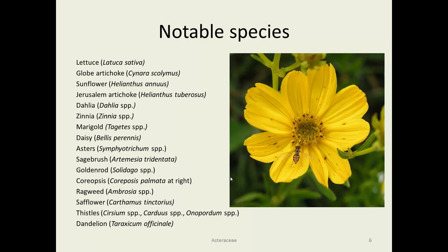Many notable species include lettuce, artichokes — both Jerusalem and globe — and sunflower. There are many, many species of sunflower; the big ones we grow for oil and sunflower seeds are the annuals, Helianthus annuus. Dahlias, zinnias, marigolds, daisies, asters, goldenrods, and coreopsis keep the horticulturalists happy. We also have sagebrush, ragweed, safflower, thistles, and dandelions — and that is indeed a short list.